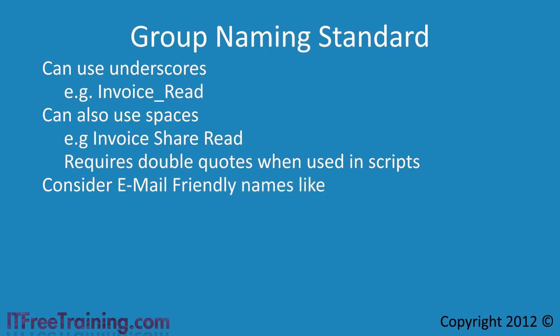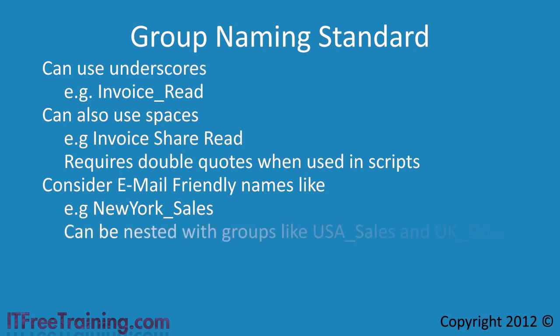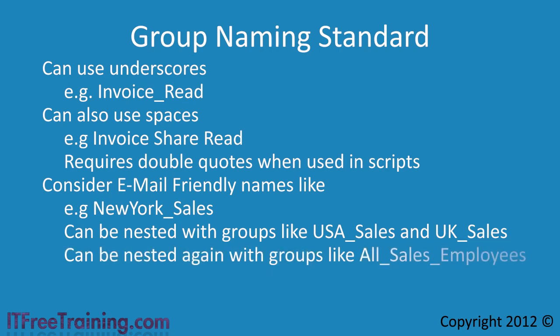Also consider that if you have an email system like Exchange, these groups can be used inside Exchange as email groups. For example, you could create a group called New York Sales and put all the sales users for New York into this group. If you want to email all the sales staff in New York, you simply email this group. For each office, you could add a group for those sales users in that office. These groups could also be put into another group called USA Sales. If you had an office in the UK, you could create a group called UK Sales. Both these groups could be put into another group called All Sales Employees. Since each location would know which employees belong in their local sales group, a local administrator in each area would be the best choice to keep this group up to date.